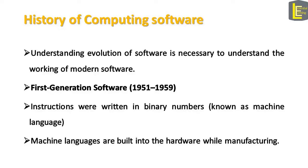The first generation of software is considered to occur at the same time as the first generation of computer devices. Instructions were written in binary numbers, also known as machine language of the computer in this generation. These languages are built into hardware while hardware is manufactured in a factory.